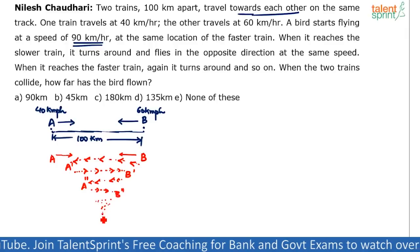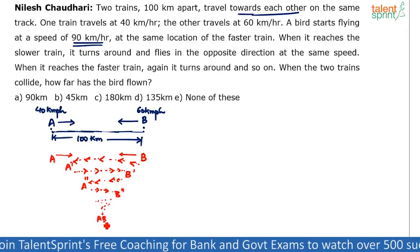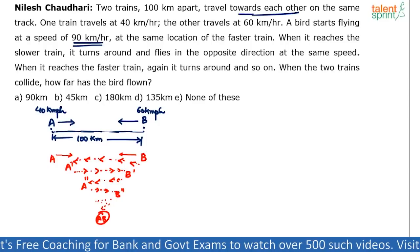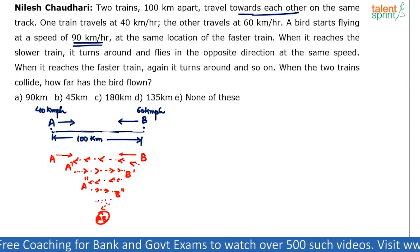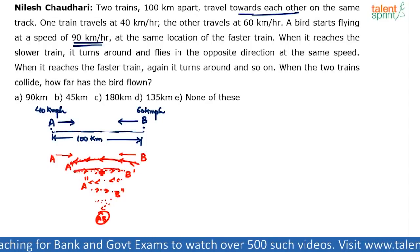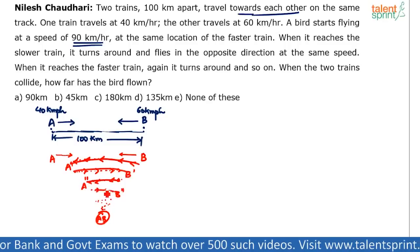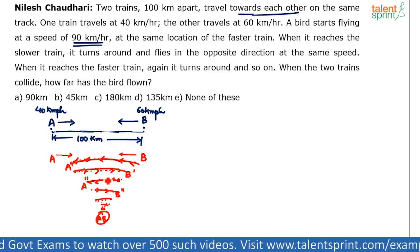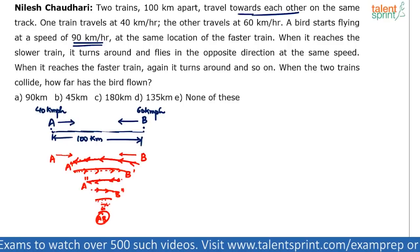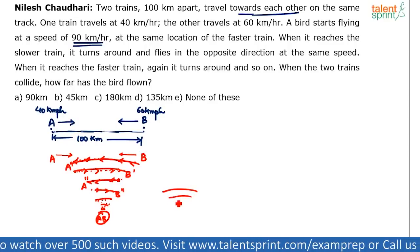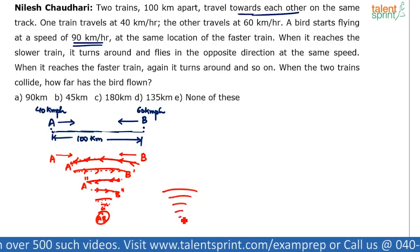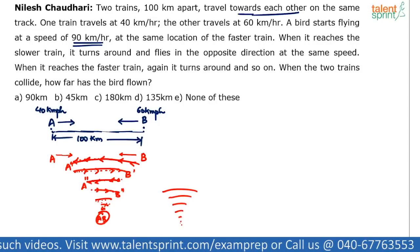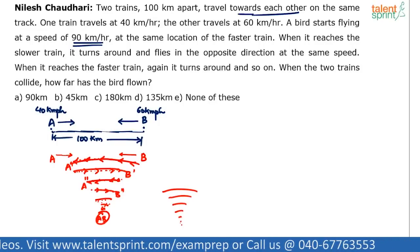This continues until Trains A and B collide. The bird's trajectory looks like a Wi-Fi symbol — the distance it travels in each leg keeps reducing at every instance. The question is: what is the total distance traveled by the bird when the two trains collide?